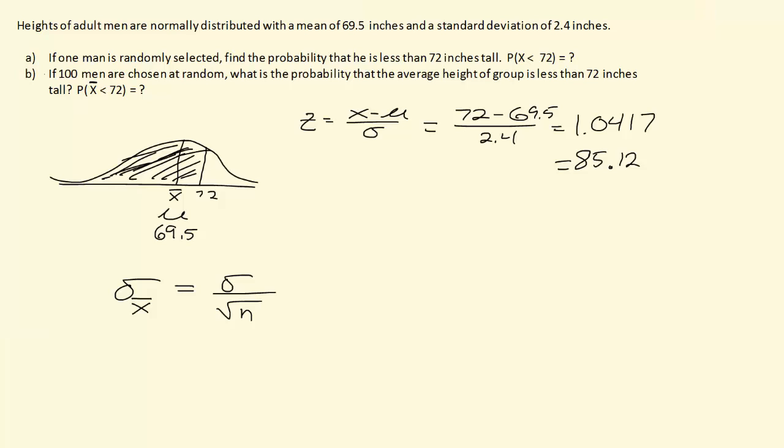However, part B we're now going to recalculate this whole thing. We have the same picture. The mean is still 69.5, and we still want to know what's the probability that somebody is less than 72 inches tall, but we're not looking at just one somebody, we're looking at 100 somebodies. So instead of the standard deviation being 2.4, we get the standard deviation of our sample means is equal to the original 2.4 divided by the square root of 100, which of course is 10, and we get 2.4 divided by 10 or 0.24. So now everything is the exact same. All that's changed is our standard deviation.